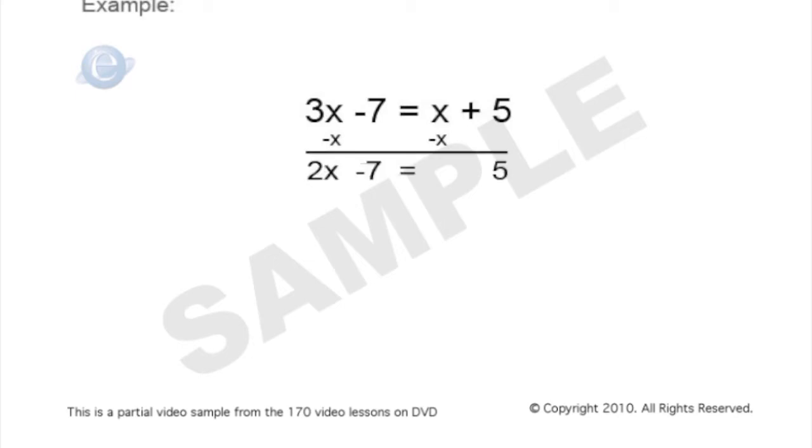And if we have our x's on the left side, then we need to have all of our numbers on the right side. So we'll add 7 to both sides to get rid of the 7 on the left side.